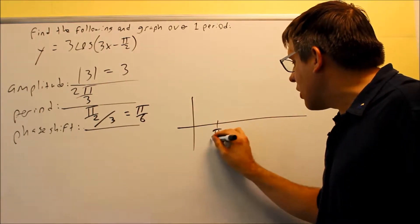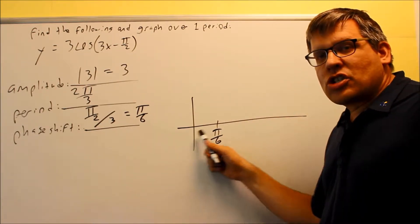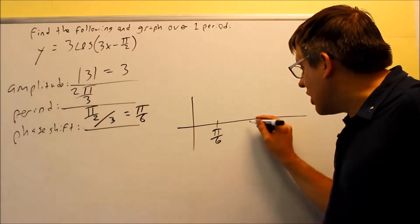What that means is that the graph itself is going to start there. So instead of starting at zero, it got shifted to the right. So now this is where my new graph begins, right here at π over 6.